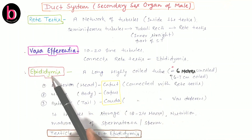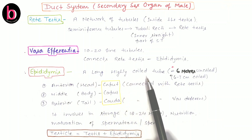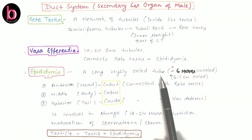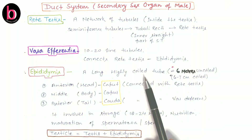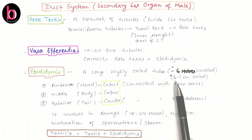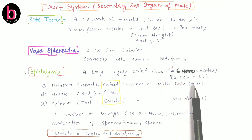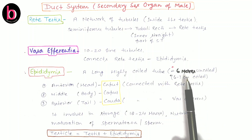Next is epididymis. Epididymis is a long, highly coiled, tube-like structure — comparatively wider than rete testis and vas efferentia. When coiled, it is nearly 6 to 7 cm long, but when uncoiled its length is nearly 6 meters. This is a very important point. At 6 meters uncoiled, the epididymis is the longest duct found in the human male reproductive system.